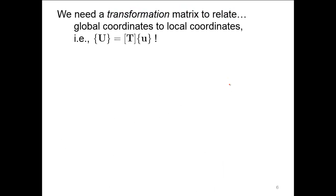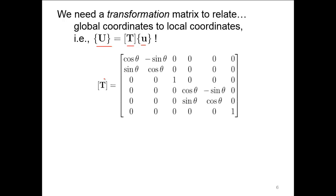We need to transform from local coordinates to global coordinates using a transformation matrix. This transformation matrix looks very similar to what we used before for trusses and axial members. The difference is we now have an extra row for the rotation piece, giving us a six-by-six matrix because we have three degrees of freedom at each node, as opposed to the four-by-four we looked at before.